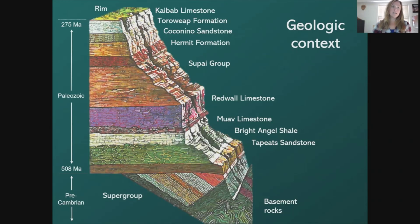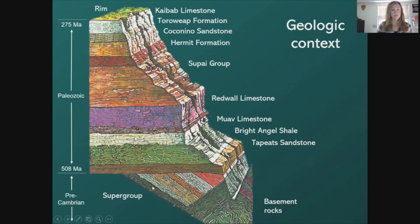Imagine cutting into the Grand Canyon like a cake and cutting out a slice — this is sort of what that slice would look like, showing each layer of rock. The oldest rocks are at the bottom, starting with the crystalline basement rocks, which used to be ancient mountains over a billion years ago. On top of that is the Supergroup, containing rock layers from over a thousand to seven hundred million years old. On top of that sit the horizontal Paleozoic rocks, which contain the majority of fossils in Grand Canyon.